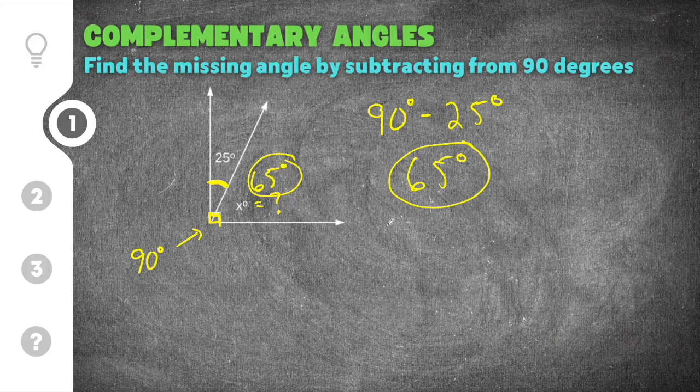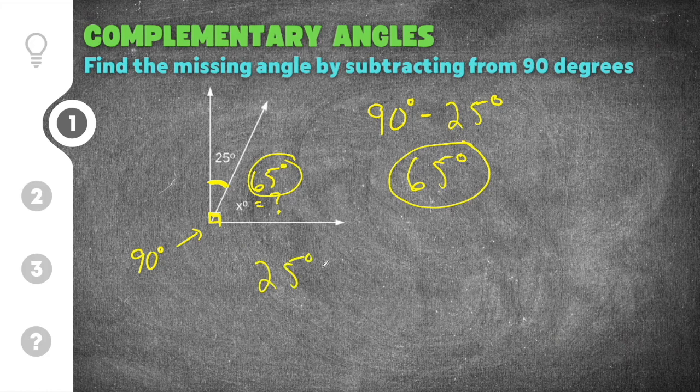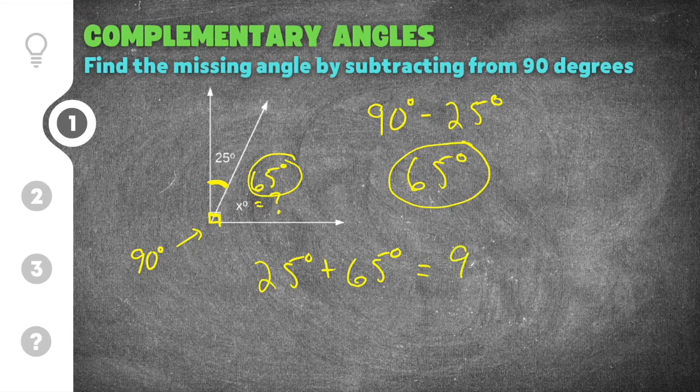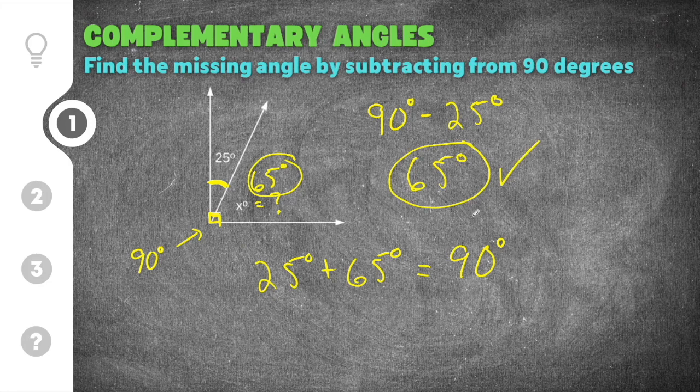Now if you want to double-check, you can say, alright, so our two angles together—25 plus the angle we just found out, which is 65—is going to add up to 90 degrees. And because they add up to 90 degrees, we know that 65 degrees has to be the correct answer.